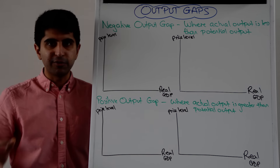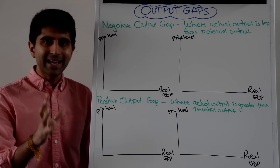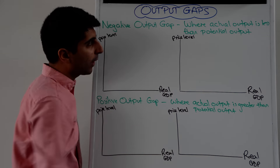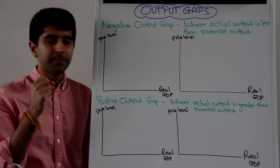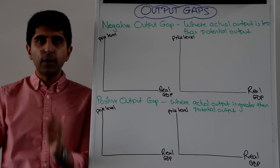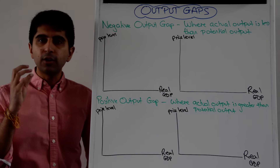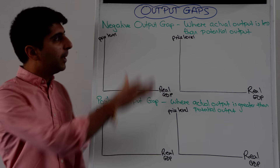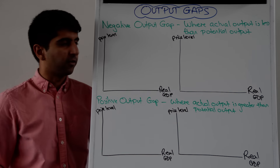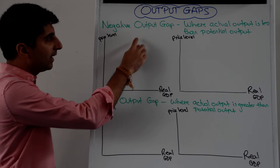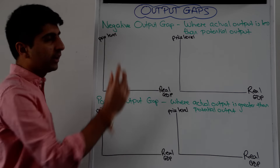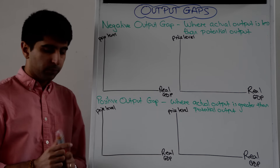Let's look at negative output gaps first. A negative output gap occurs anytime actual output is less than the potential level of output. This is also known as a deflationary gap and also known as a recessionary gap because you tend to see this when the economy is suffering from a recession.